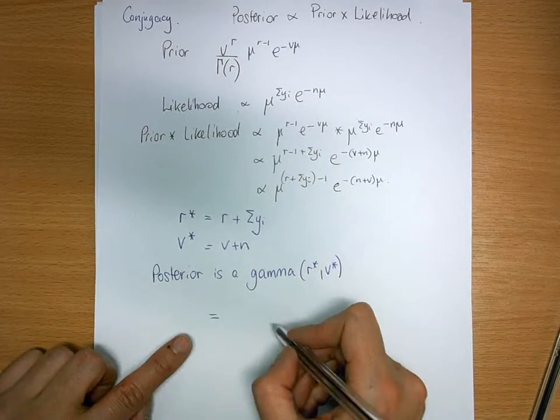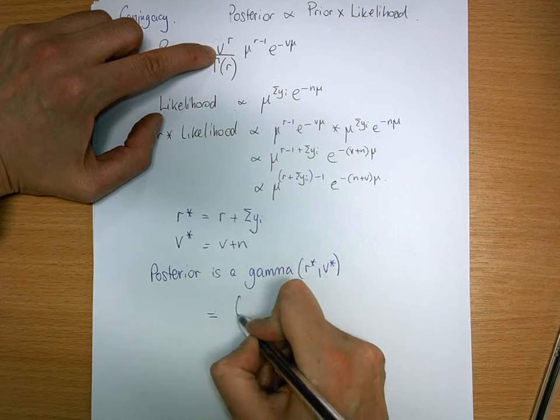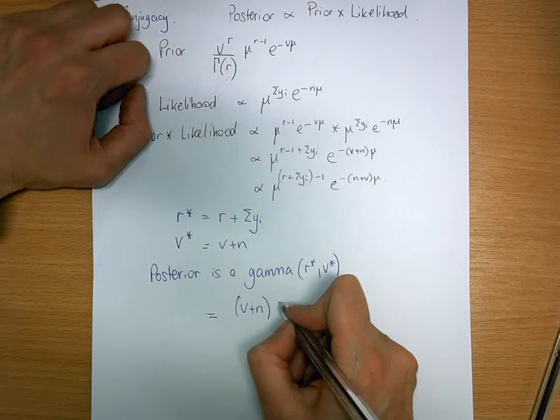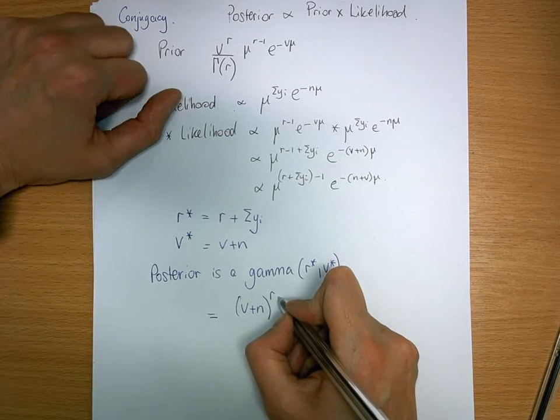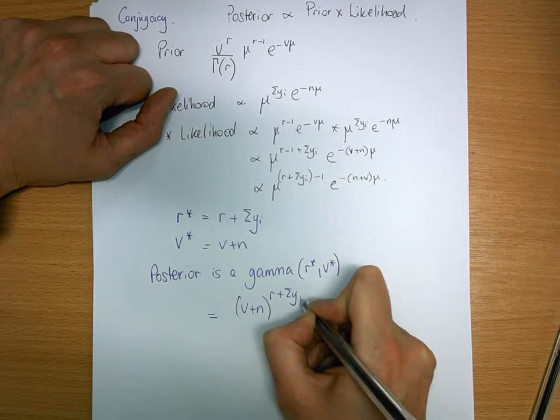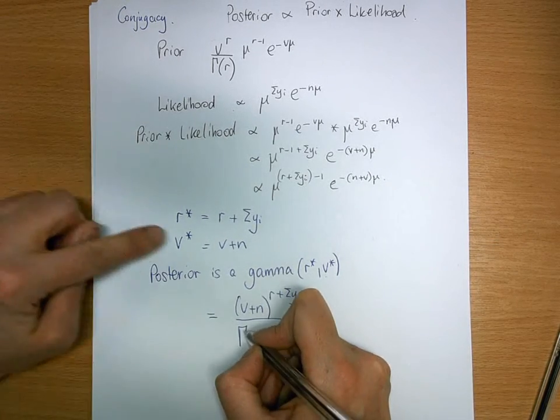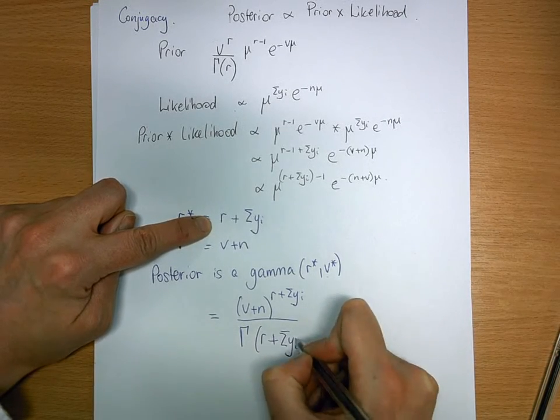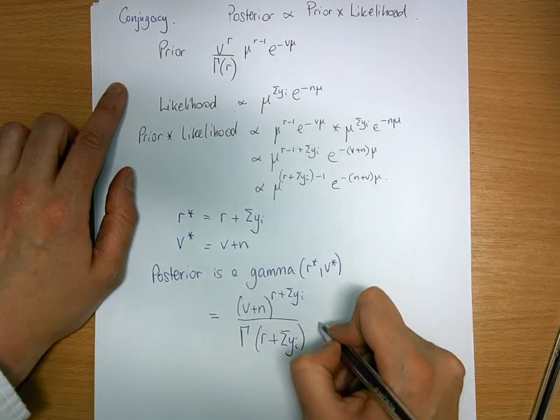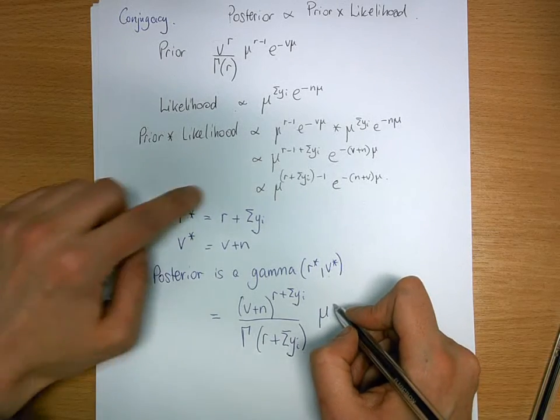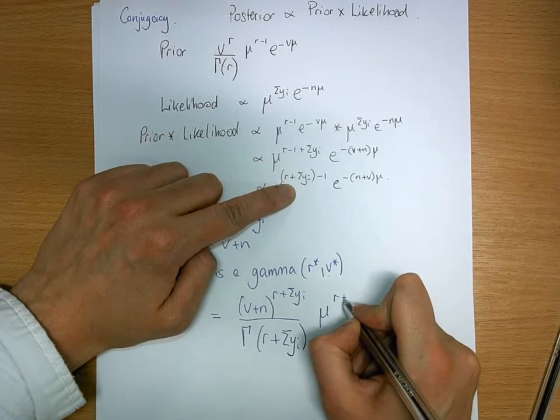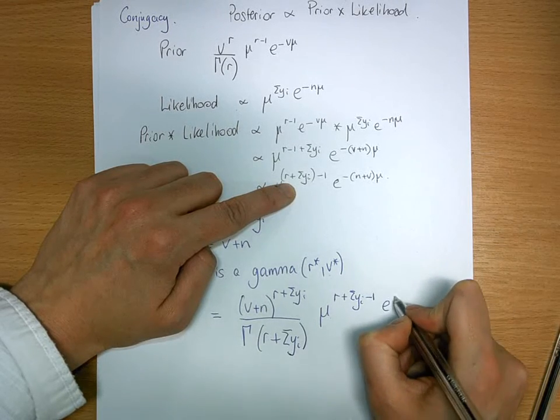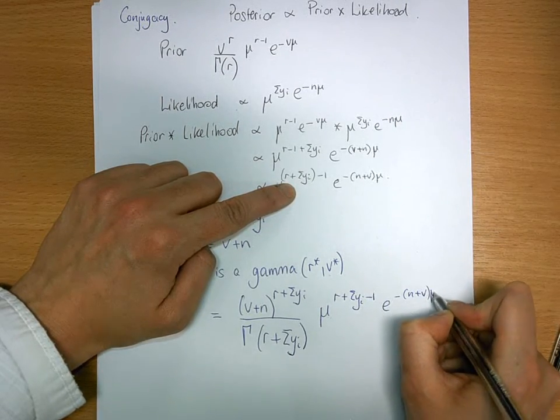And that's equal to v star, which is v plus n, to the power of r star, which is r plus the sum of yi, mu to the—well, we've set it up here—r plus the sum of yi minus 1, e to the minus n plus v mu.